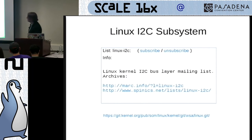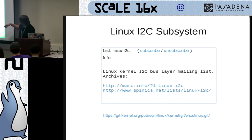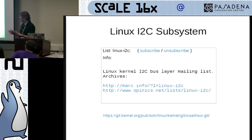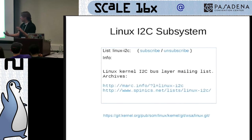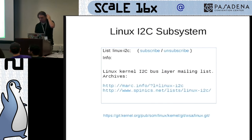The Linux I2C subsystem mailing list is your entry point into the subsystem for mainline. If you're a kernel developer, you need to know how to use the mailing list. You can subscribe at the link shown; there's also a web interface. For mainline development you go through the subsystem maintainer, who monitors the list, has a separate Git repository, applies your patches, and sends them upstream with a merge request to Greg Kroah-Hartman, eventually reaching the mainline kernel.